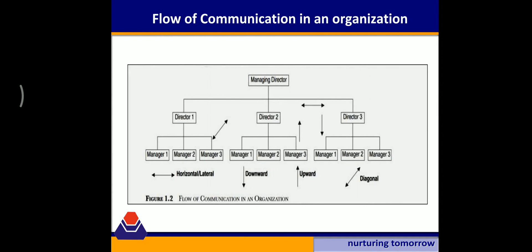Let us look at a flowchart example using Company A, which has a Managing Director followed by three directors — Director One, Two, and Three — and under each director there are three managers. If Manager One communicates to Director Two of Department B, that is an example of upward flow. If the Managing Director issues a circular or notice to a department, that is downward flow. If Director One communicates to Director Two, or Manager One communicates to Manager Two, that is horizontal flow. And if Manager Three under Director One communicates to Director Two, that becomes crosswise or diagonal flow. I hope you have understood all four flows easily. See you in the next lecture, thank you.